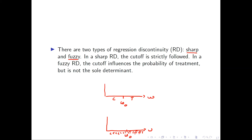In the fuzzy case, it is more probable that you get put in the control group if you are to the left of the cutoff, but it's not absolute. So the cutoff influences the probability of treatment, but the probability of treatment is also affected by other variables.